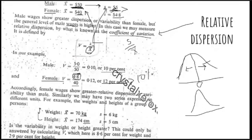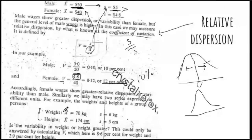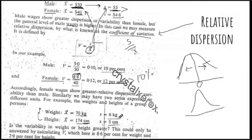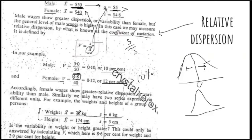In the first case we used relative dispersion because there was a difference between averages, and the two distributions were in the same unit — dollars. But when the distributions are in different units — for example, one is in kilograms and one is in centimeters — the standard deviation is in kilograms for one and centimeters for the other. You cannot compare them directly. You cannot say that because one value is 6 and the other is 5, one has more dispersion, because they are in different units. You compare them by calculating their coefficient of variation.